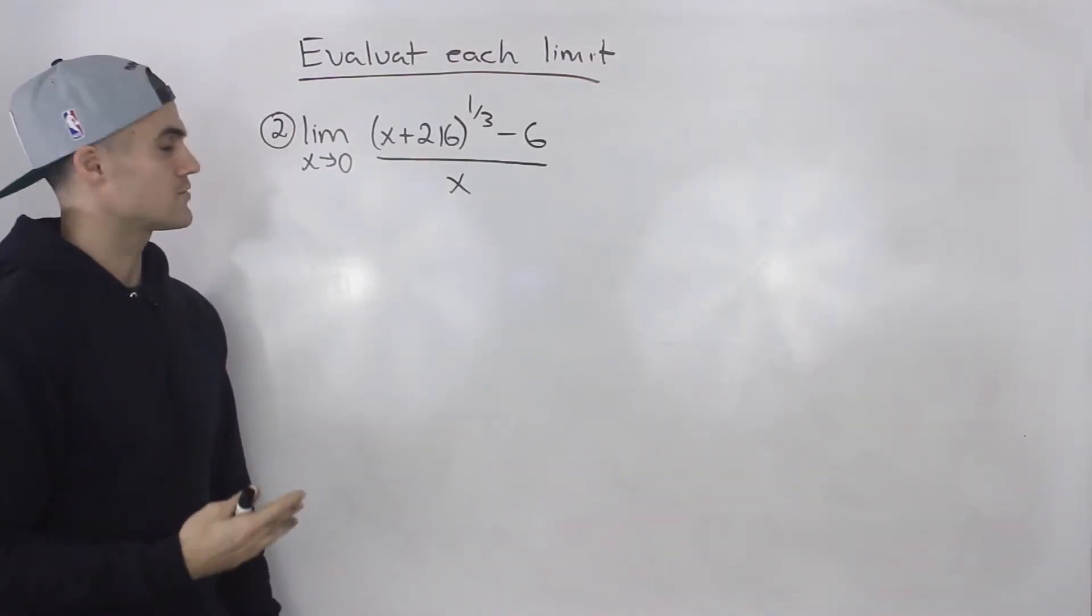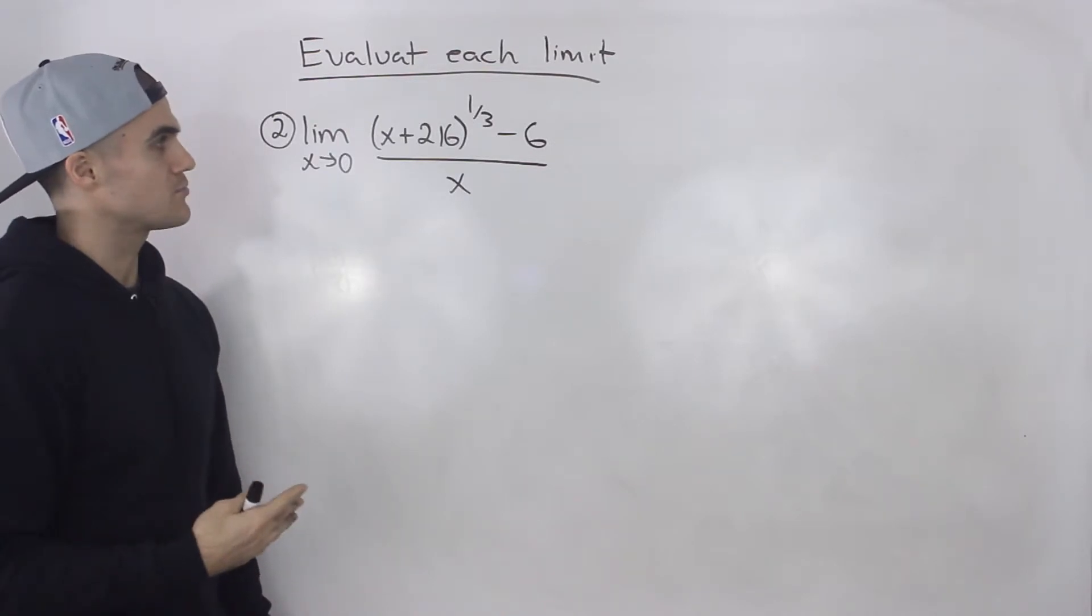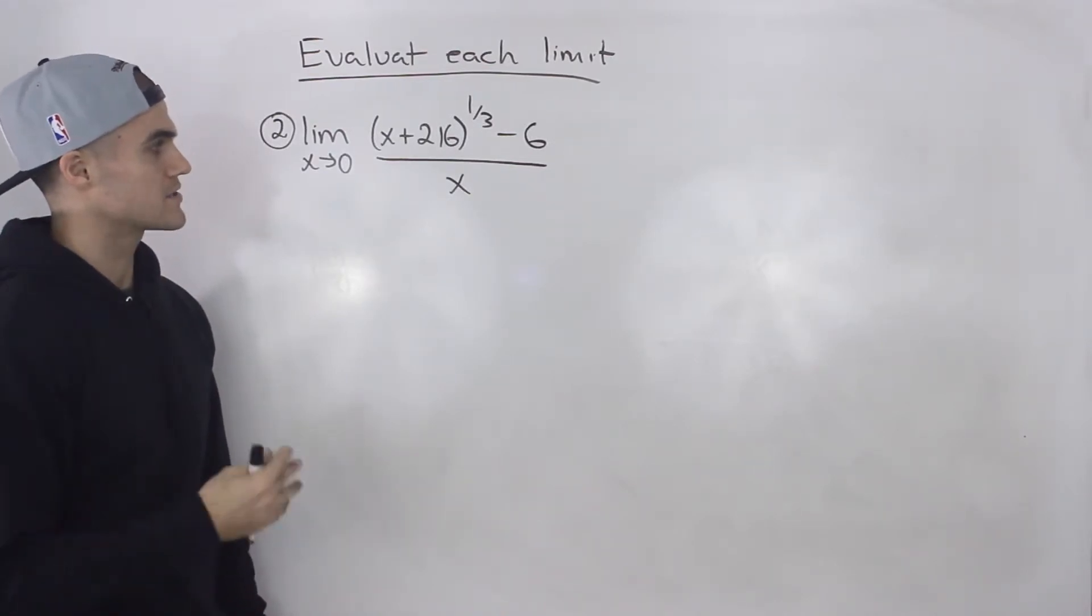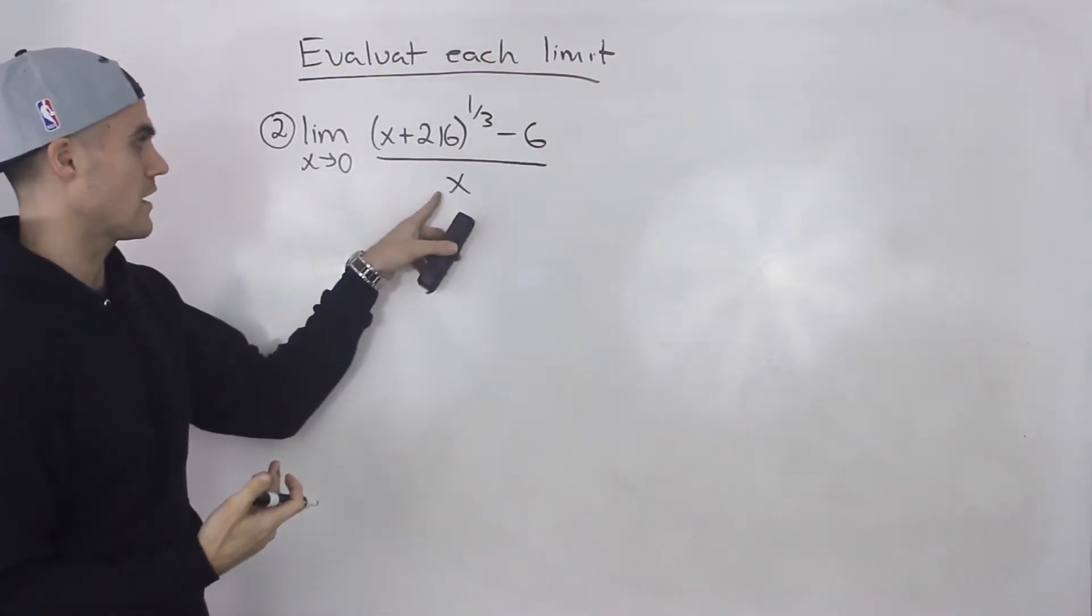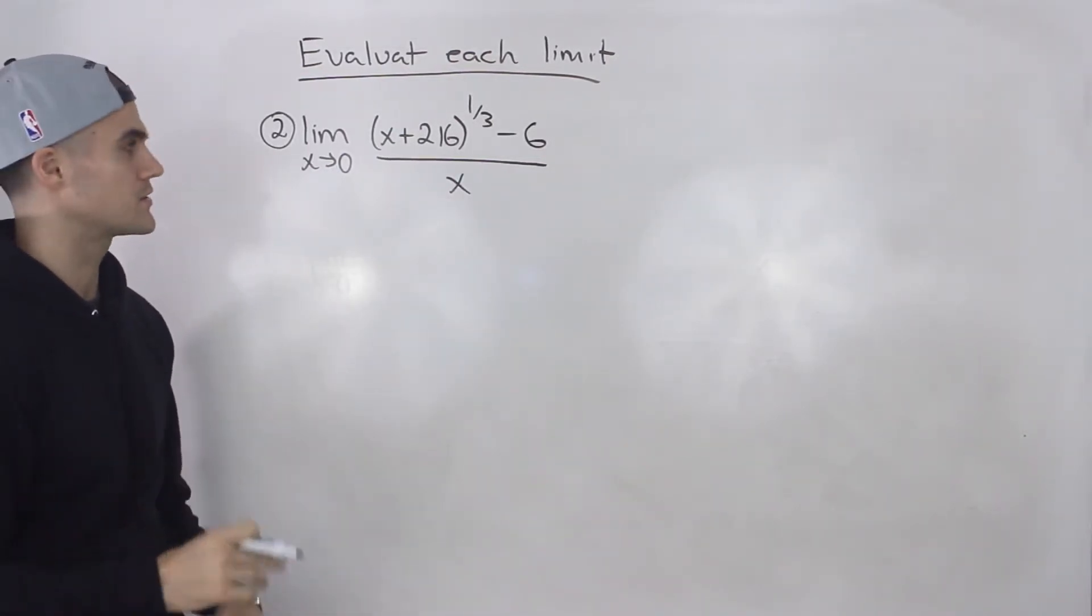Limit as x approaches zero of x plus 216 to the power one over three minus 6 all over x. Direct substitution, can we do it? Plugging in zero for x, we can't, because the denominator is going to be zero.